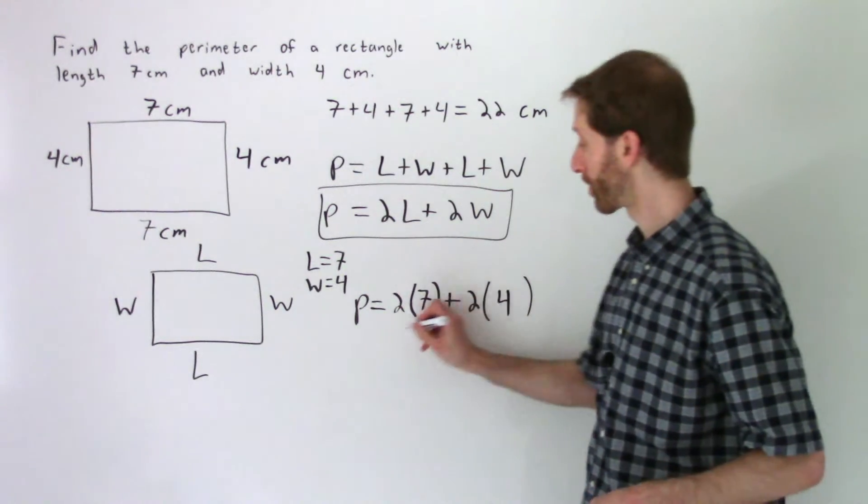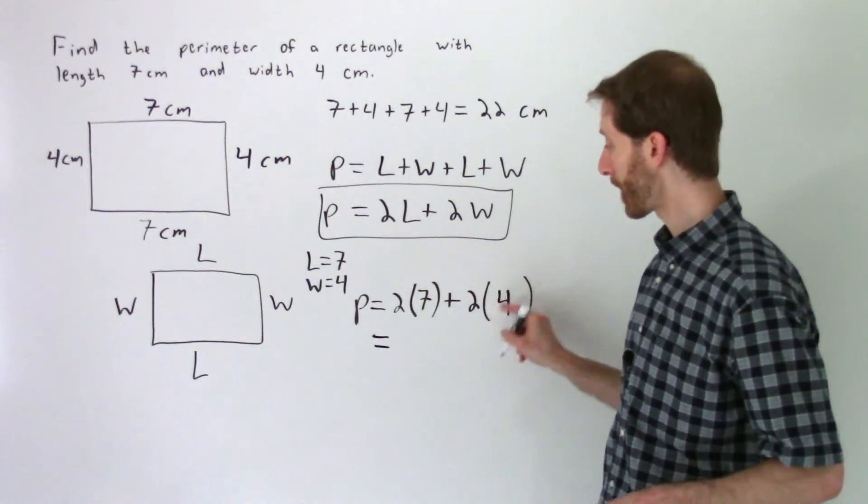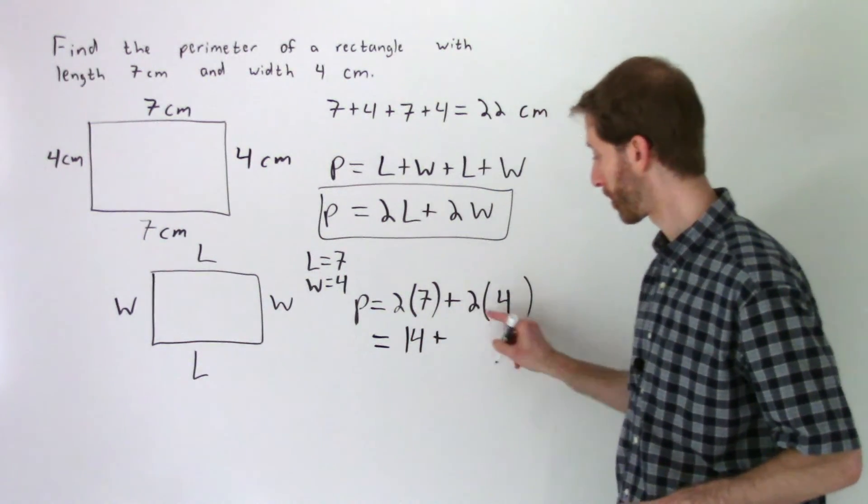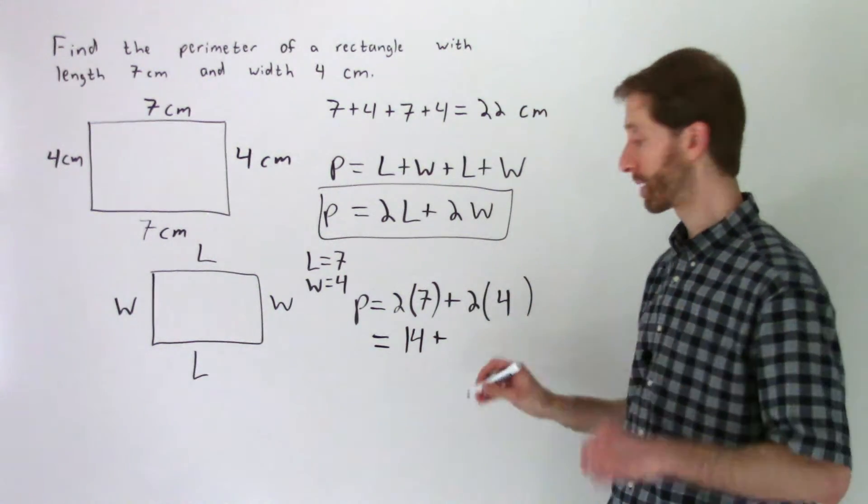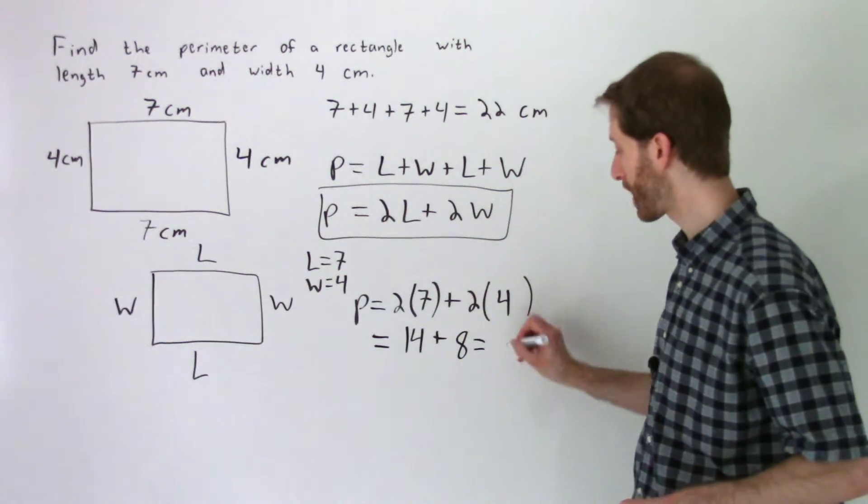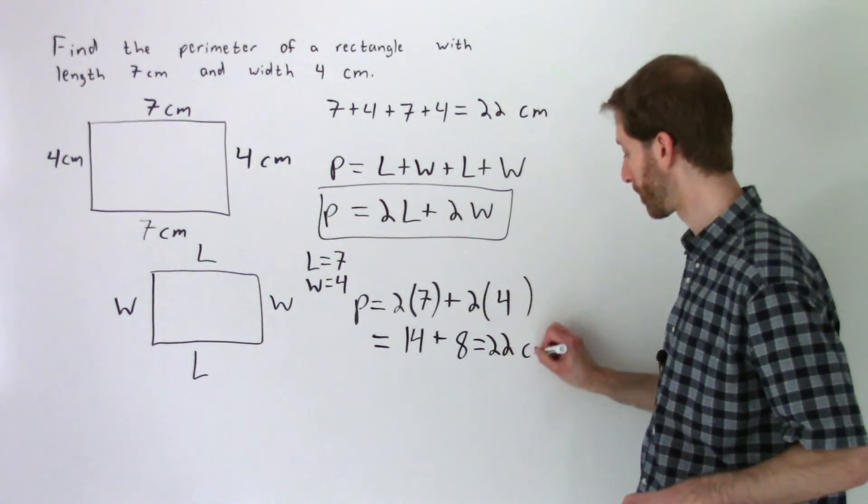All we have left is a little bit of order of operations. So we multiply first. Two times seven is 14. We can also multiply that as well. Two times four is eight. And then when we simplify 14 plus eight, we get 22, and the units are still centimeters.